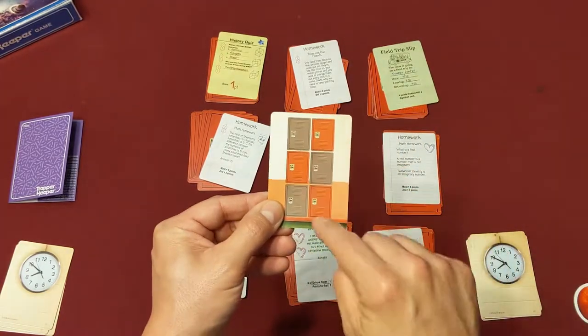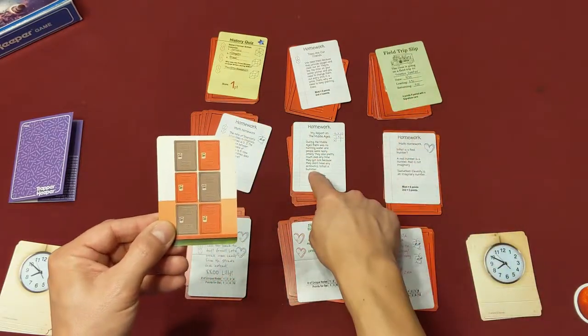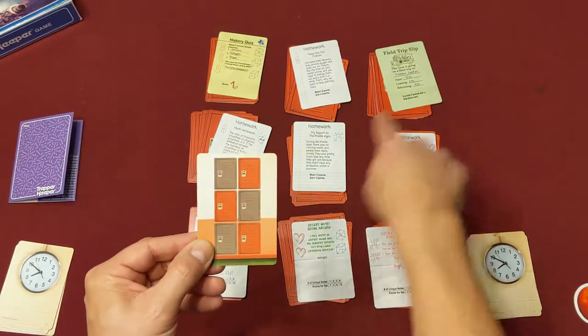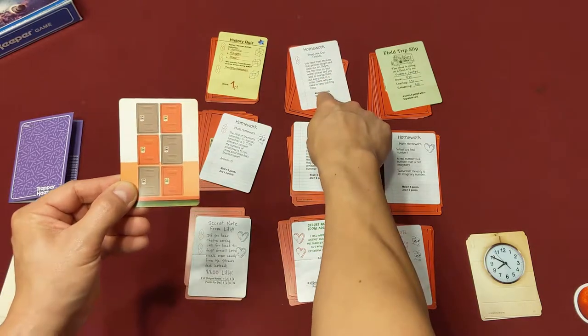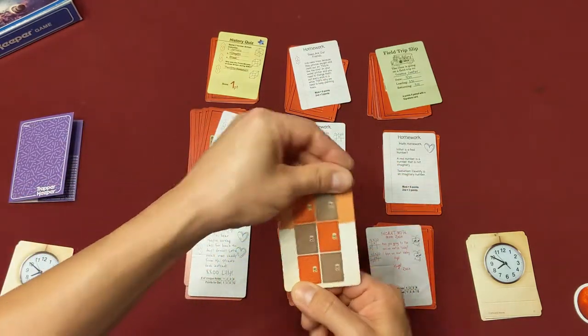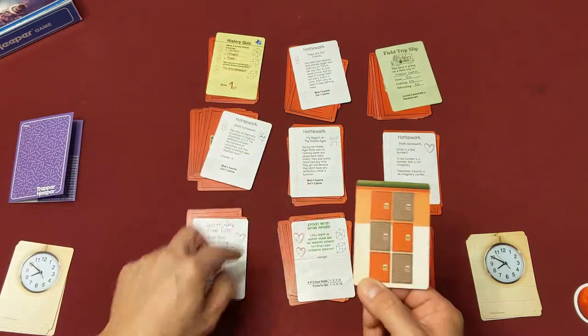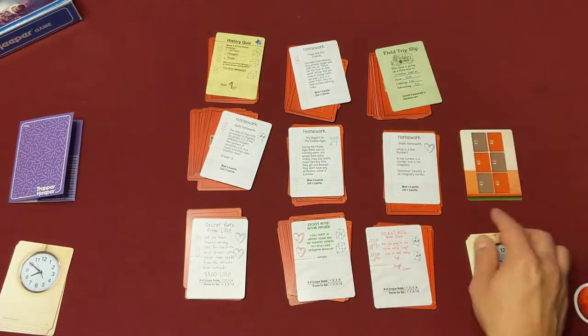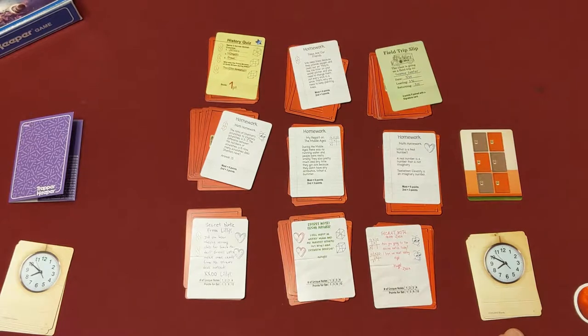So for example, I could take these red lockers here. I could take this top one, I could take this middle one, and I could take this bottom one because they're in that shape. I could take the top one here, this one, and the bottom one. You cannot rotate it though. So I can't do this and take these three cards here. It has to be in the orientation that you've turned the card over, and it stays in this orientation the whole time.